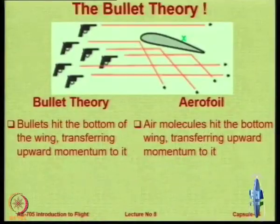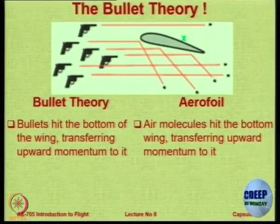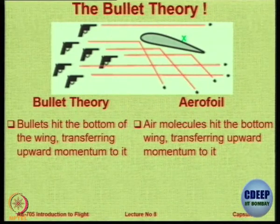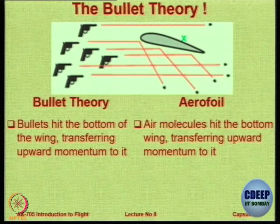So now the next theory: the skipping stone theory, or the theory in which momentum is transferred. I also call it the bullet theory. So you fire a bullet — that is the reaction. So what is this bullet theory? The bullet theory says that you have an aerofoil type body at a particular angle, or no angle, but you have curvature.